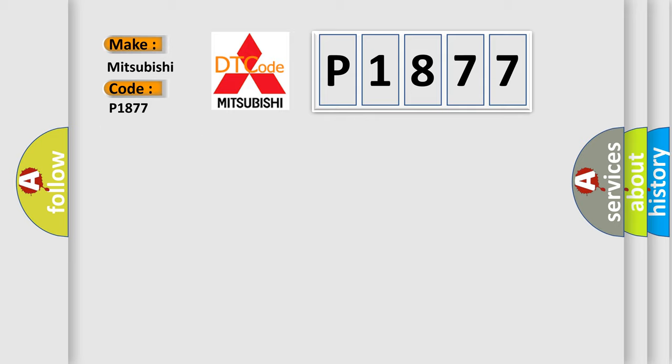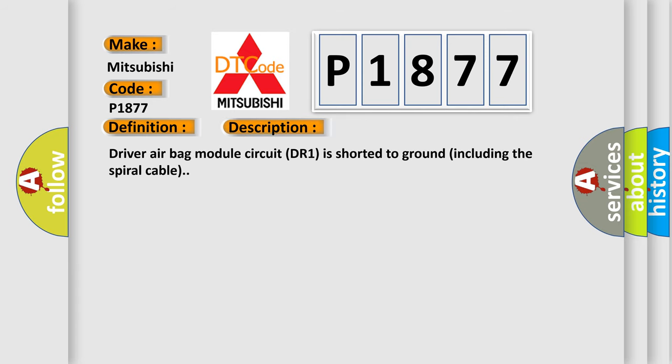The basic definition is SRS driver airbag module. And now this is a short description of this DTC code. Driver airbag module circuit DR1 is shorter to ground including the spiral cable.